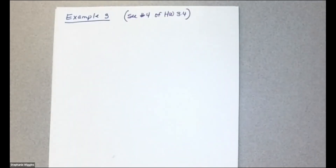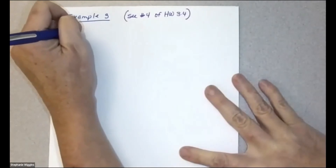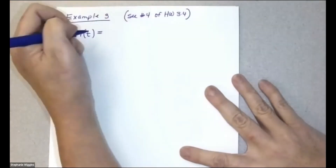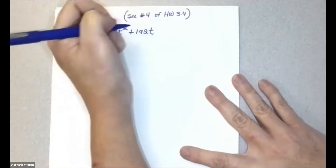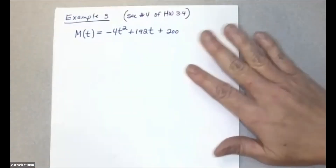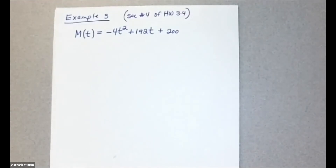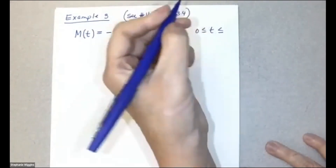The next problem is an application problem. An employee's monthly productivity M — the number of units produced in a month — is a function of years of service. For a certain product, M(T) = −4T² + 192T + 200, defined on the interval from T = 0 to T = 40, where T is the number of years of service.